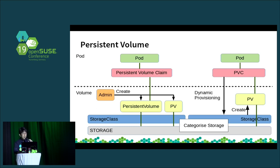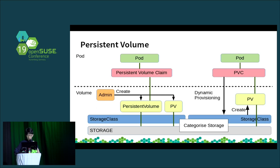Kubernetes has two ways to provision volumes. One is static: this is handmade by the administrator — the administrator writes YAML for the persistent volume, and Kubernetes attaches the persistent volume to the persistent volume claim automatically by finding the one that satisfies the demands. Two is dynamic provisioning: when a persistent volume claim is created, the persistent volume is created by Kubernetes automatically. To use this, we need to define a provisioner in the storage class. The provisioner creates the persistent volume and attaches pods automatically. Kubernetes has many built-in provisioners for major storages like GCE Persistent Disk and Cinder.